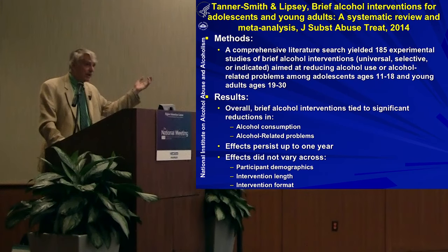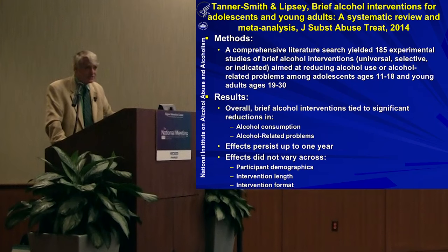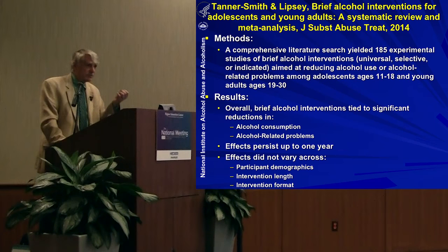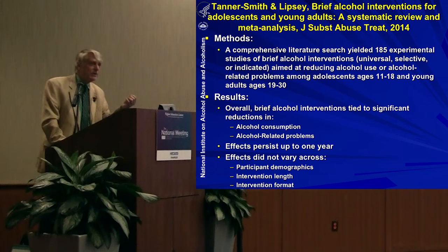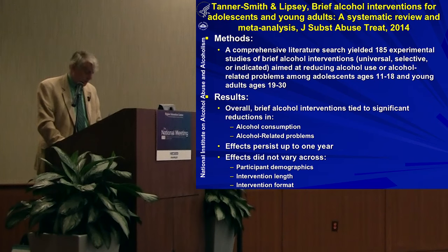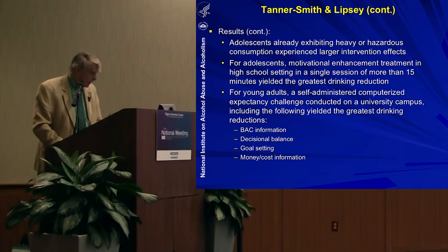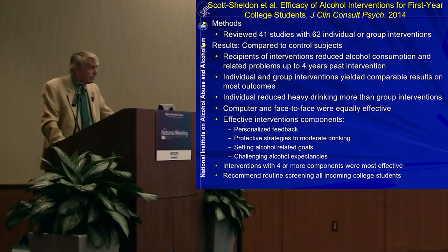Tanner Smith's review actually found stronger and more enduring effects when screening and brief intervention is done with adolescents than for adults. Why is that important? The U.S. Preventive Services Task Force, if they say something's effective, it can be reimbursed under the Affordable Care Act. I hope they will reconsider the adolescent literature so that providers can be reimbursed for providing screening and brief intervention with adolescents.